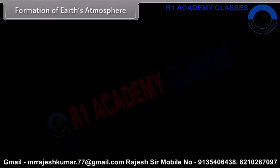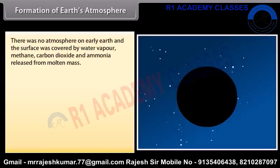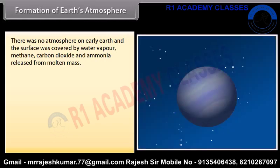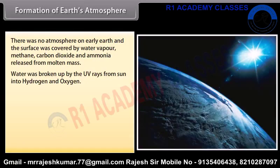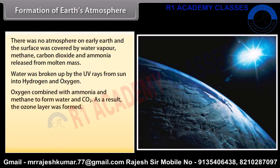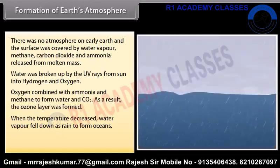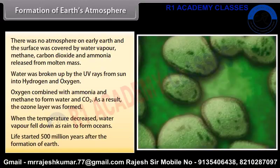Formation of Earth's Atmosphere. There was no atmosphere on early Earth. The surface of Earth was covered by water vapor, methane, carbon dioxide and ammonia released from molten mass. Water was broken up by UV rays from the sun into hydrogen and oxygen. Oxygen combined with ammonia and methane to form water and CO2. As a result, the ozone layer was formed. When the temperature decreased, water vapor fell down as rain to form oceans. Life started 500 million years after the formation of Earth.